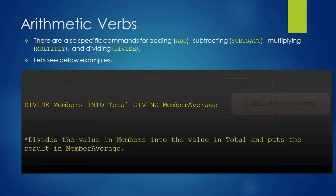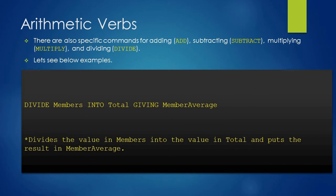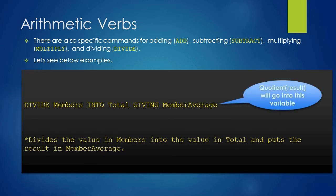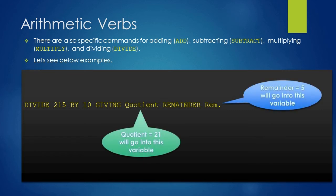After ADD and SUBTRACT, let's see DIVIDE. In the divide statement, DIVIDE, INTO, and GIVING are the COBOL reserved words, and members, total, and member average are the variables. We are dividing the value in members into the value in total and giving the result to member average. In the next divide example, we are dividing the literal value 215 by the literal value 10, giving the quotient to the quotient variable and the remainder to the RAM variable. We can use literal values in all ADD, SUBTRACT, DIVIDE, and MULTIPLY verbs.